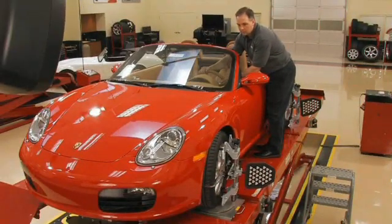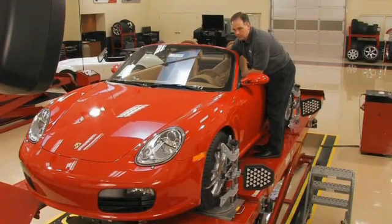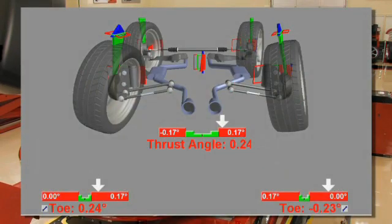A dog track condition can be confirmed by performing a quick alignment check. Pay particular attention to rear toe and thrust angle.